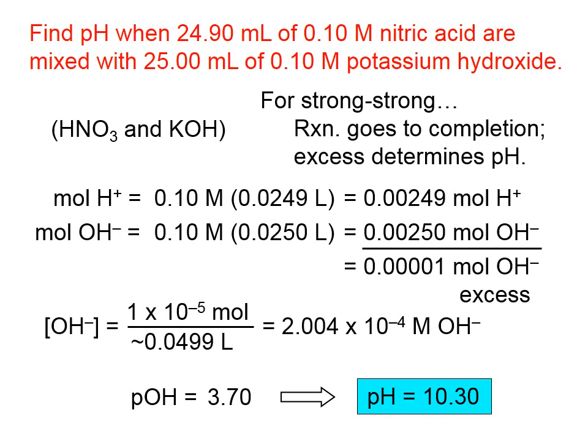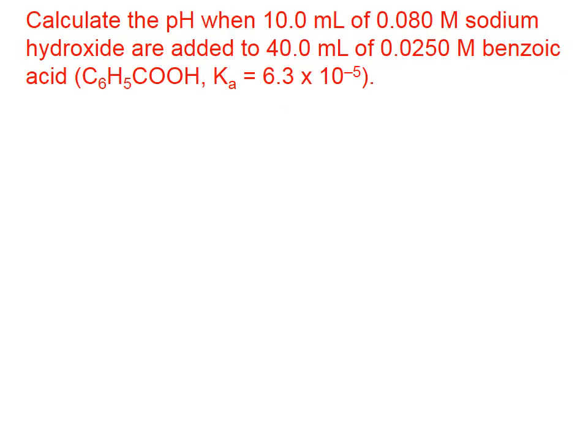Next, we're going to deal with a weak and a strong, and how does that work? What we're asked to do here is find the pH when we've mixed a strong base, sodium hydroxide, with a weak acid, benzoic acid you should recognize as a weak. I've given you the formula there, and its Ka.